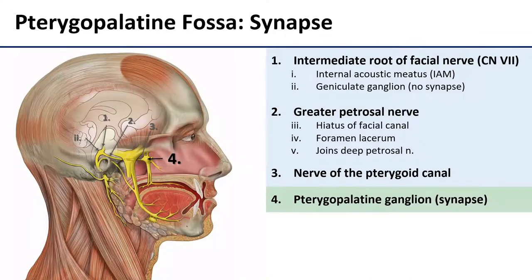Eventually, it emerges into the pterygopalatine fossa, where it will synapse with its postganglionic partner in the ganglion of the same name. So that's the pterygopalatine ganglion, which is sitting in the pterygopalatine fossa. And that is where the synapse between the preganglionic and postganglionic parasympathetic neurons is going to happen.